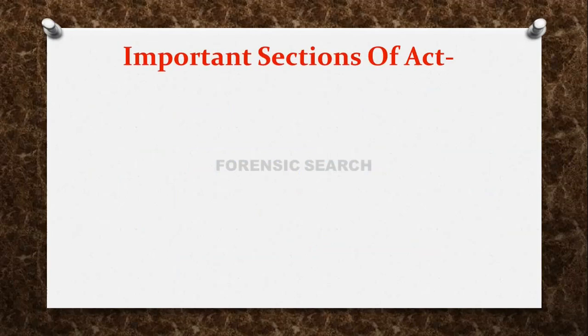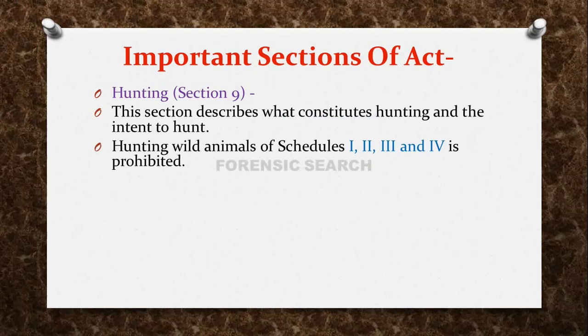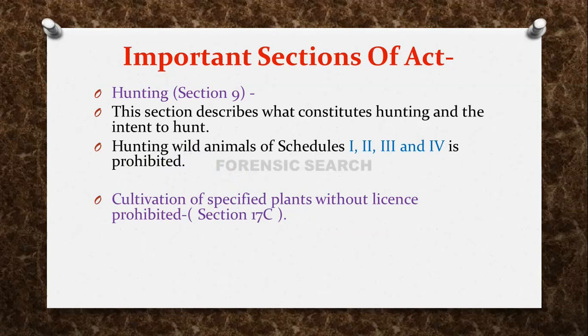Some important sections of the Wildlife Protection Act: Section 9 deals with hunting — it describes what constitutes hunting and the intent to hunt, and hunting of wild animals of schedules 1 to 4 is prohibited under this section. Section 17C deals with cultivation of specified plants without a license, which is prohibited. Some plants in India cannot be cultivated without a license, and these are mentioned under Section 17C.